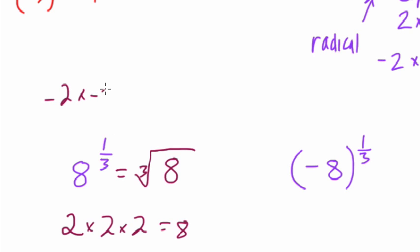However, negative 2 times negative 2 times negative 2 equals negative 8, right? So it doesn't equal 8. There's only one root, and that's 2.